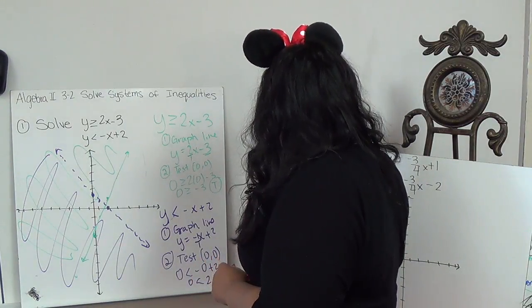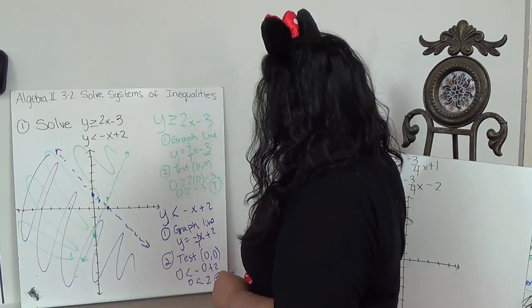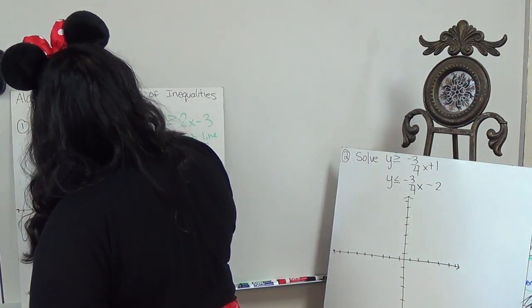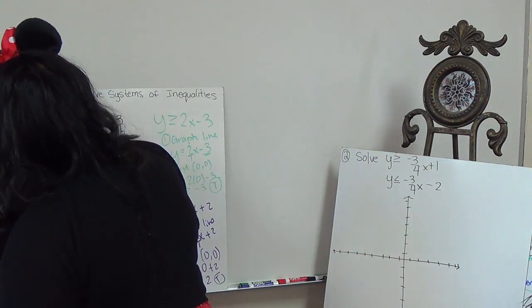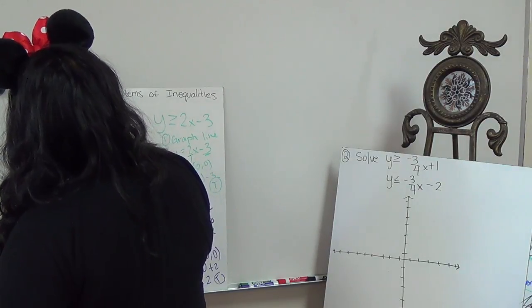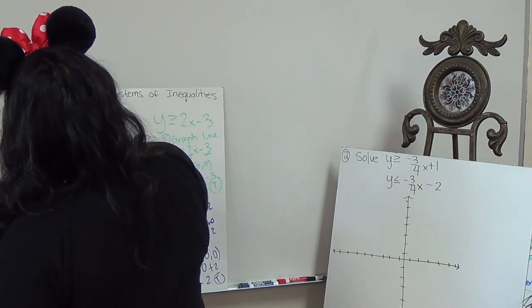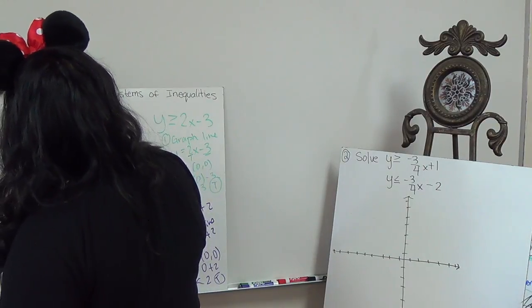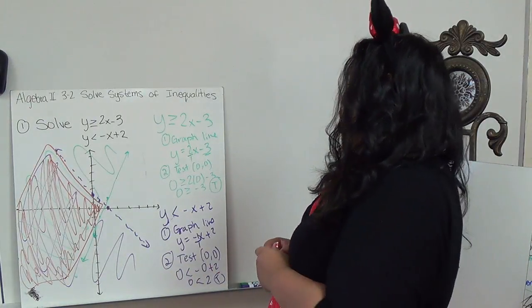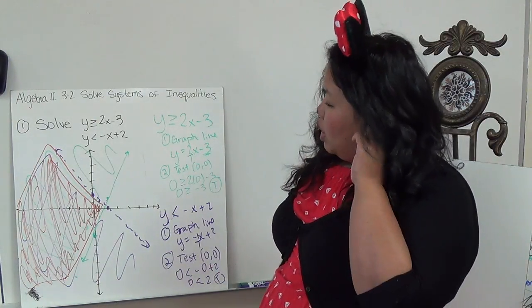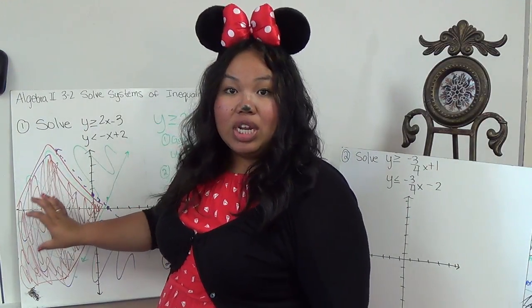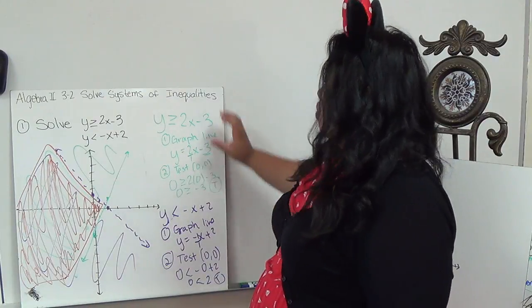So where it overlaps, which is right here, this brown, this is my solution. And if I really want to emphasize, especially if you're using purple, I'm going to go ahead and just shade it much darker. If you want to color code it, you can. But this is where they overlap. So that means any of these points that I try in this shaded area will work for both of them.